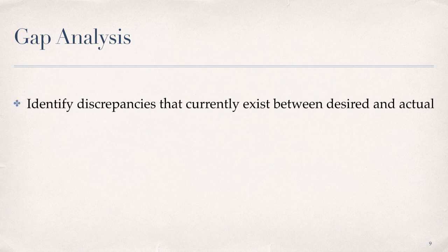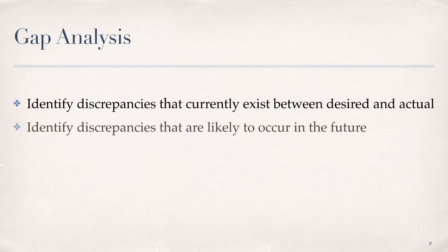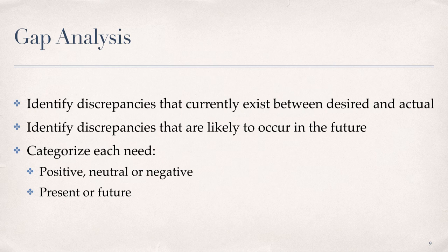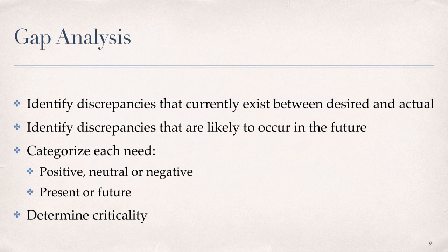Following performance analysis, we move on to gap analysis. The gap in performance is simply the difference between the desired and actual performance. So we begin with identification of the discrepancies that currently exist between desired and actual performance. We also need to be forward thinking in terms of identifying discrepancies that are likely to occur in the future. Once the gaps are identified, they are categorized as positive, neutral, or negative in terms of impact and whether the gaps are current or future. The final step in gap analysis is to determine the relative criticality of each gap. We do this to determine which gaps to address, as well as for ordering and prioritization.